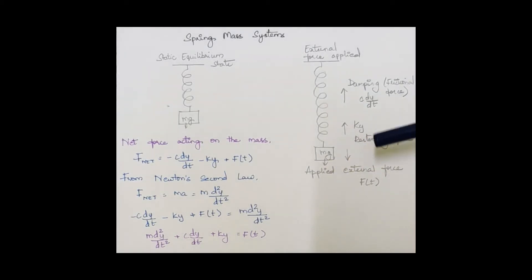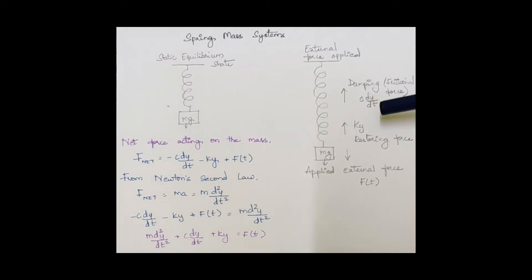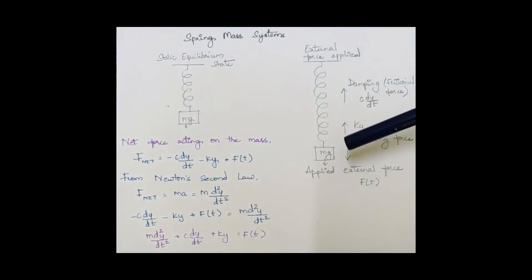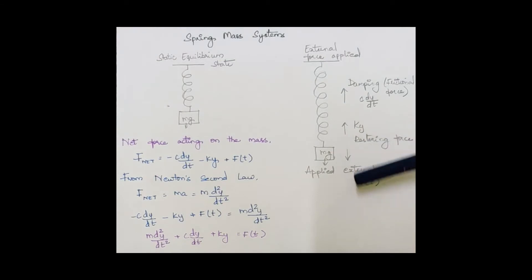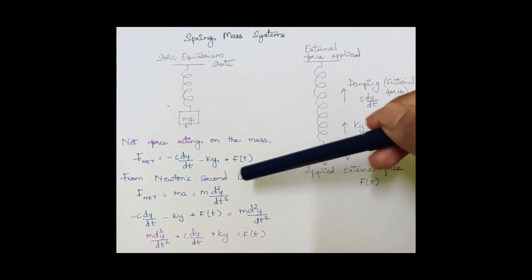ky is the restoring force, which is applied in the opposite direction. The damping frictional force is also in the opposite direction, given by c·dy/dt. The net force acting on the mass will be −c·dy/dt − ky + f, where f is the external force applied.